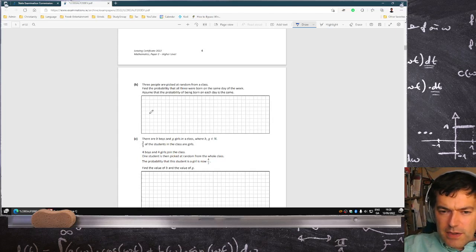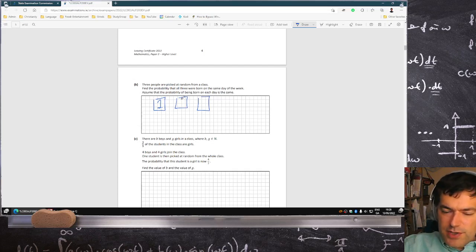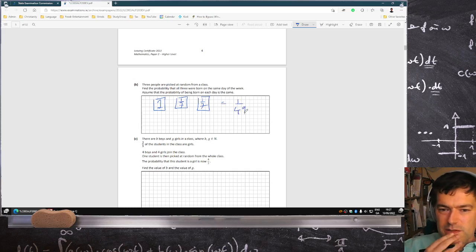Three people are picked at random from a class. Find the probability that all three were born on the same day of the week, assuming that the probability you're born on each day is the same. So I've seen this one in the book before. The first person could be born on any day, so that's a seven in seven chance. The second person needs to be born on the same day as the first person, so that's a one in seven. And the third person needs to be born on the same day as well, so that's a one in seven, so that's one in 49. So the first person can be born any day of the week, then Barry has to match her and then Charlie has to match her, so one in 49.